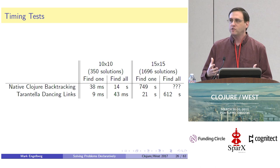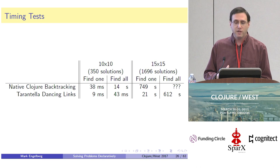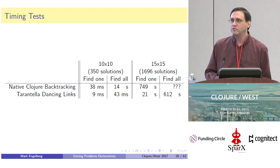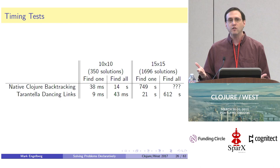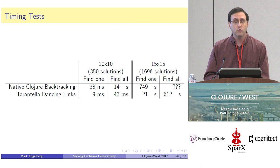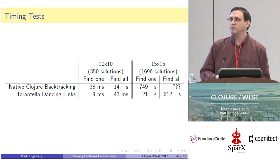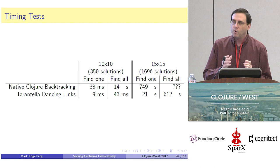What have we gained by solving the problem this way? First, it makes it easier to write the solution once you think of that transformation, because I didn't have to specify how to solve it — I just needed to declaratively represent my problem. That makes the code a lot shorter. As a comparison, I wrote a straightforward Clojure backtracking algorithm using Clojure's built-in immutable data structures, and it was about 40 lines of code. But the Dancing Links implementation is two lines: once you have the Y placements defined, you just zip-map them with itself and call dancing-links.